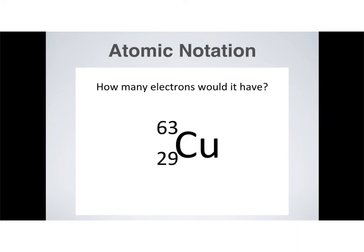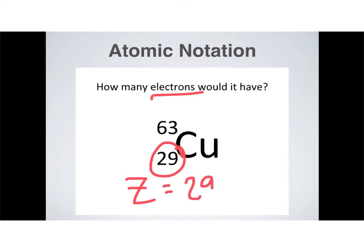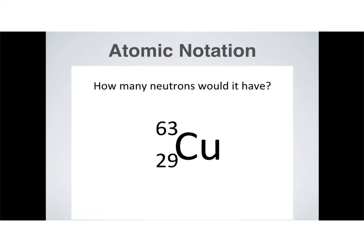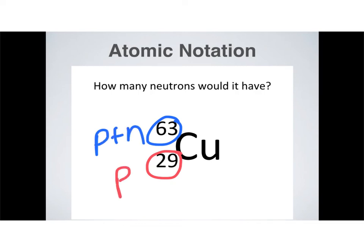How many electrons would this isotope have? This is an isotope of copper. The atomic number is down here — that means I have 29 protons, and if I have 29 protons, I also have to have 29 electrons. How many neutrons would I have? I need two pieces of information to find neutrons. My mass number up top gives me protons plus neutrons; my atomic number gives me protons. So I subtract: 63 minus 29 gives me 34 neutrons.